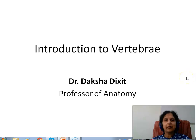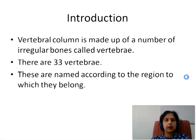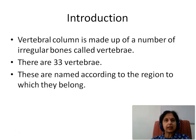Hello students. Today we will be studying Introduction to Vertebral. The vertebral column is made up of a number of irregular bones called vertebrae. There are 33 vertebrae and these are named according to the region to which they belong.